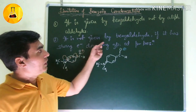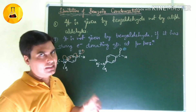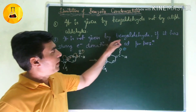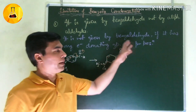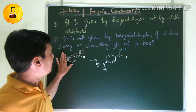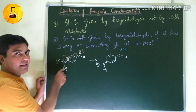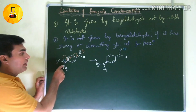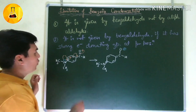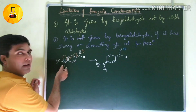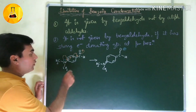Second limitation: if benzaldehyde has a strong electron donating group at the para position, the reaction does not proceed. For example, if there is N,N-dimethyl group at the para position, it has a +I effect and electron donating nature. Through conjugation in the ring structure, this affects the electrophilicity of the carbonyl carbon.